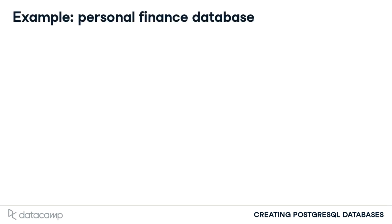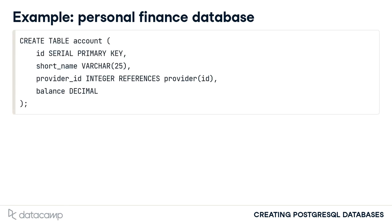The GRANT command is best demonstrated with an example. The first table added to the personal finance database might be an account table to list different accounts they use, such as bank accounts, credit cards, retirement investments, etc. This table was created by a super user account.